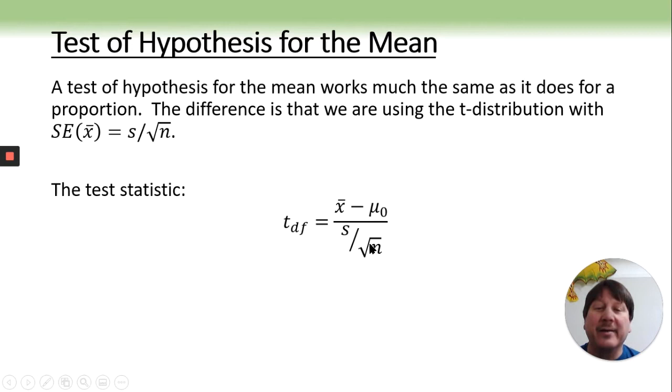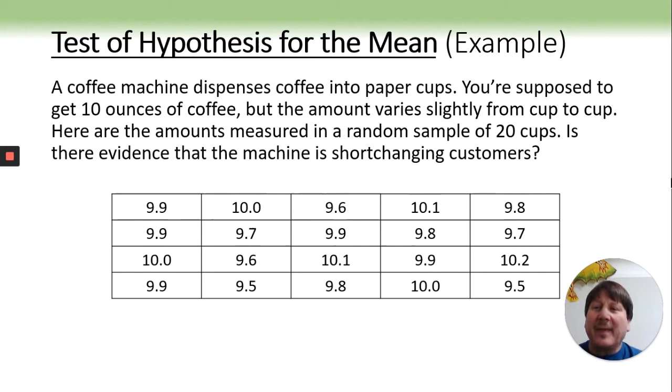Let's go ahead and do a quick example. Coffee machine dispenses coffee into paper cups. You're supposed to get 10 ounces of coffee, but the amount varies slightly from cup to cup. Here are the amounts measured in a random sample of 20 cups. So, is there evidence that the machine is shortchanging customers?